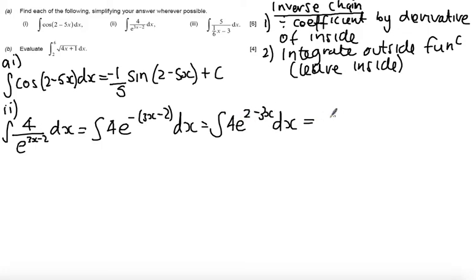Now integrating should be fairly straightforward. Divide the coefficient by the derivative of the inside function. The derivative of the inside function is minus 3, so I get minus 4 thirds. Integrate e to the 2 minus 3x, I get e to the 2 minus 3x, and then I get my constant of integration.